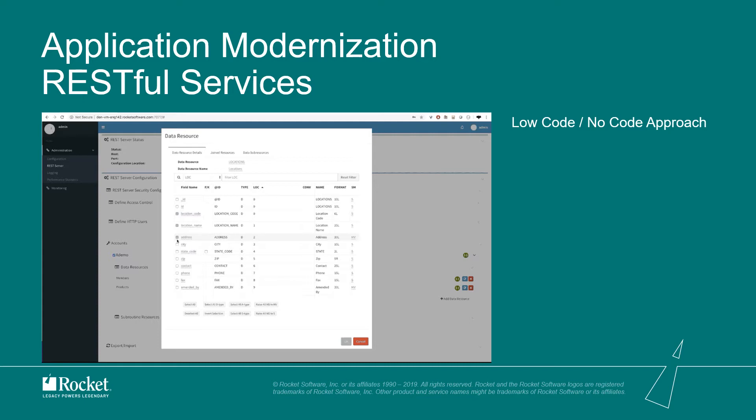A typical development team wants to develop quickly with minimal code, and MBIS plays a major role here. You can create REST endpoints simply by selecting the fields you want — that is the low-code or no-code approach. Also, if you have existing BASIC subroutines with business logic in BASIC language, these can easily be exposed in MBIS in the form of subroutine endpoints.